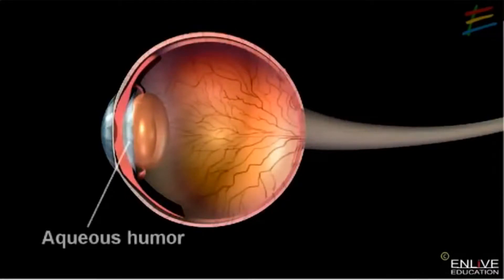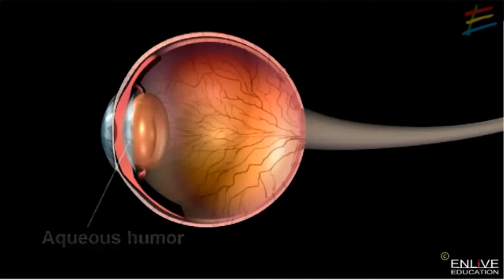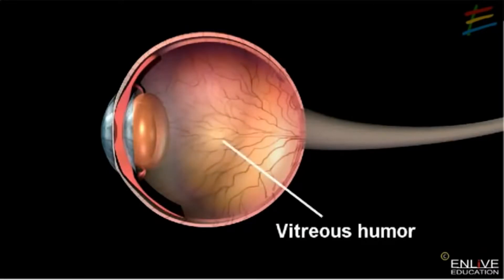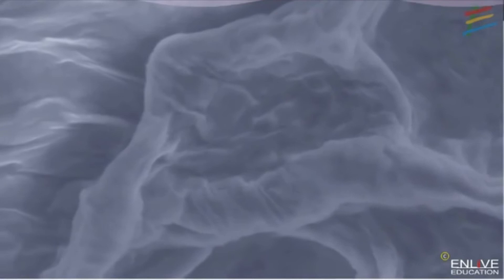Between the lens and the cornea is the aqueous humor, consisting mostly of water and a little salt. The largest space within the eye is filled with vitreous humor, consisting chiefly of water mixed with salt and albumen. It is a highly transparent jelly-like substance and plays a very important role in visual adjustment.